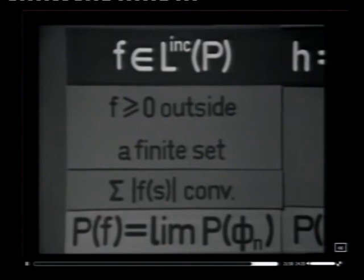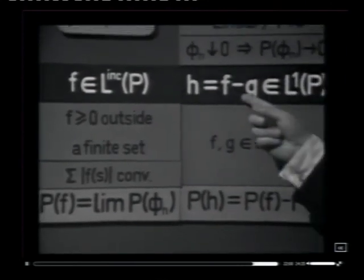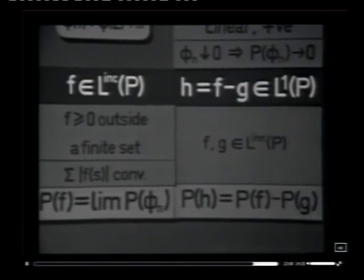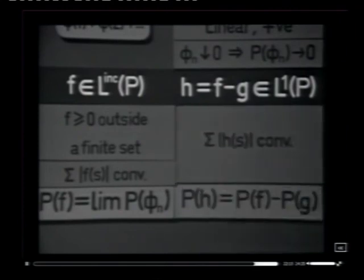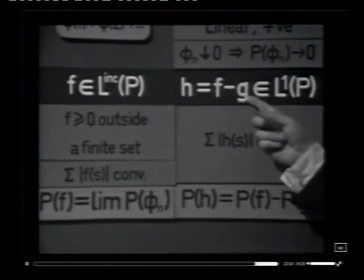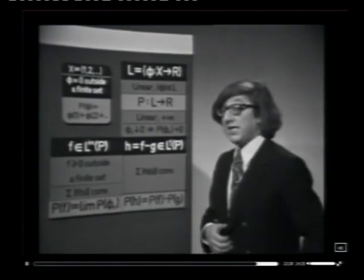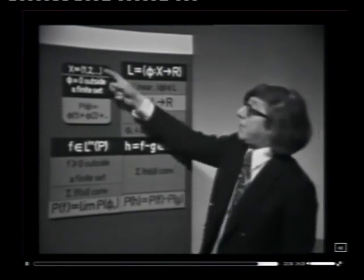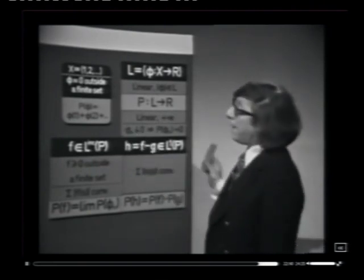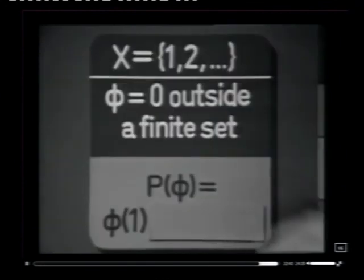What does L-inc look like? Each phi has only a finite set of values, but f being a limit of a sequence of phi's can have more and more non-zero values — f is not restricted to having only a finite number of non-zero values. However, f cannot take negative values past a certain point, because phi_1 had zero values after a certain finite number and the phi_n's increased towards f, so it's impossible for f to be negative past that point. So f can only have a finite number of negative values — f must be positive outside a finite set. The integral of f is the limit of a sequence of bounded sums, so the infinite series corresponding to f must be absolutely convergent. As for L1, it is the difference of two functions each giving an absolutely convergent series, so L1 just consists of all functions which give rise to an absolutely convergent series.